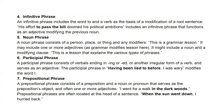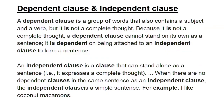Know the definitions of the seven different phrase types and be able to list them. What is the difference between a dependent and independent clause? A dependent clause is a group of words that contains a subject and a verb but is not a complete thought. Because it is not a complete thought, a dependent clause cannot stand on its own — it is dependent on being attached to an independent clause to form a sentence.